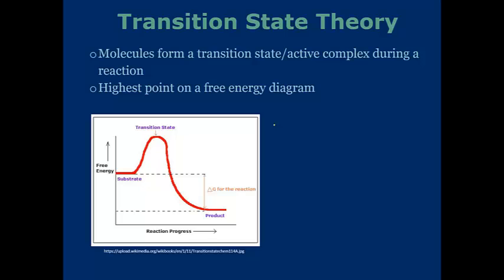A transition state is simply a state, is an active complex that happens during the reaction, and it's the highest point of the free energy diagram, which is listed below on the chart. However, there are times that the transition state is not stable, and simply a theoretical.